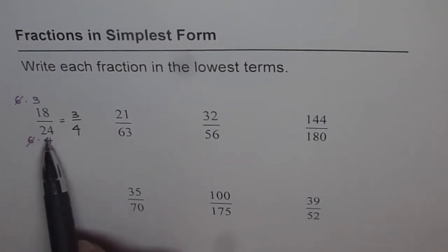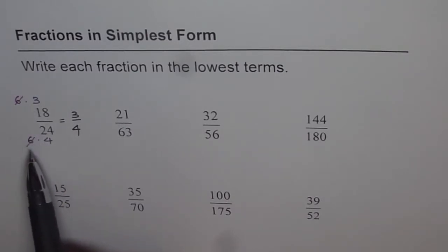That is, we wrote both numerator and denominator as its factors and then cancelled out the common factors.